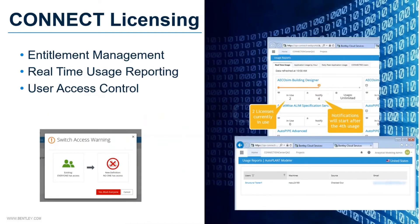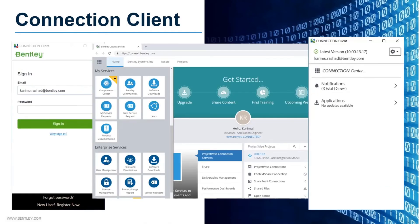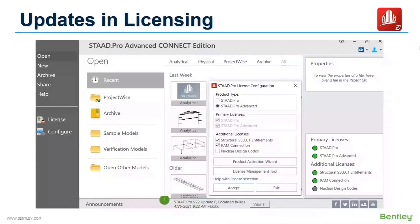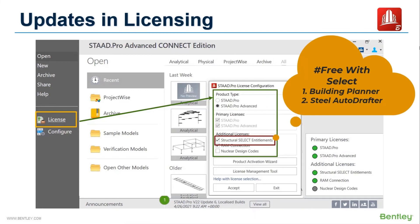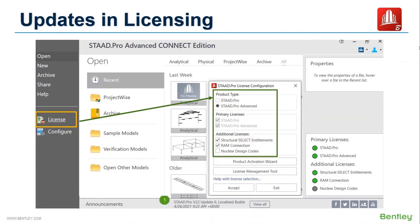Now coming to another major change in Connect Edition: the change in the licensing system. In Connect Edition, a new licensing system is followed which is called Connect Licensing. With Connect Licensing, product activation is managed by user sign-in through the connection client, which is installed on each machine that uses Bentley applications. You can change the license settings anytime from the license dialog. Select the type of license, like basic or advanced feature usage of STAT. If you or your organization is under Select Subscription, you can also use some additional features like Building Planner Mode and Steel Autoraptor. You don't need to pay extra for these modules. You can also activate usage of additional modules like Connection Design or Nuclear Design from here.